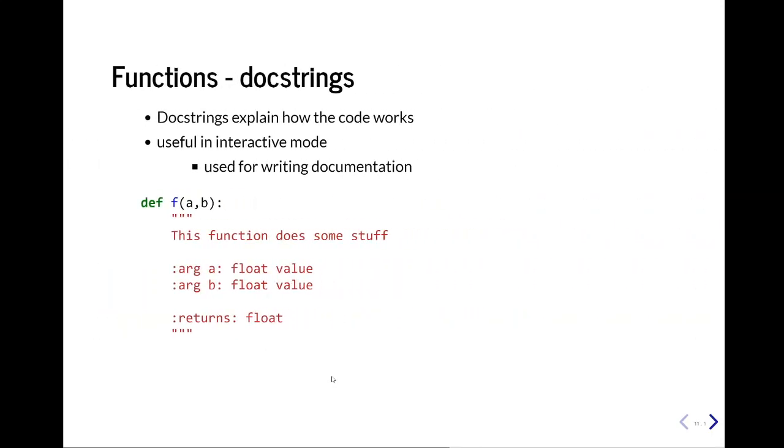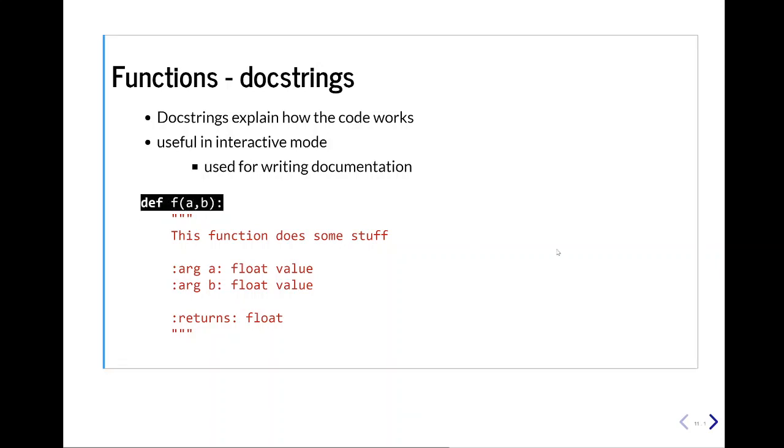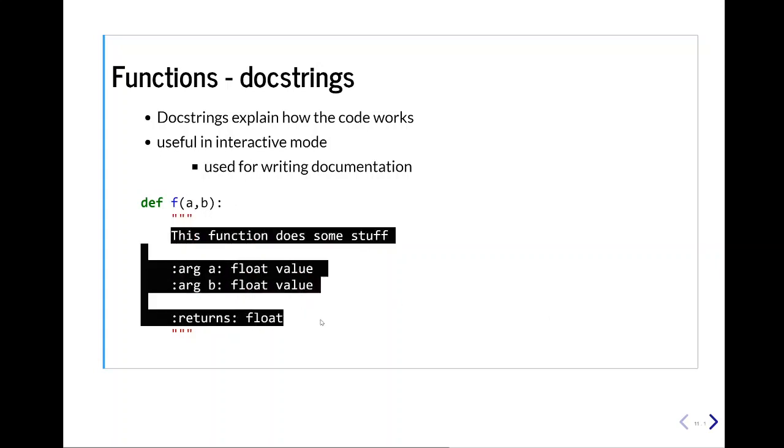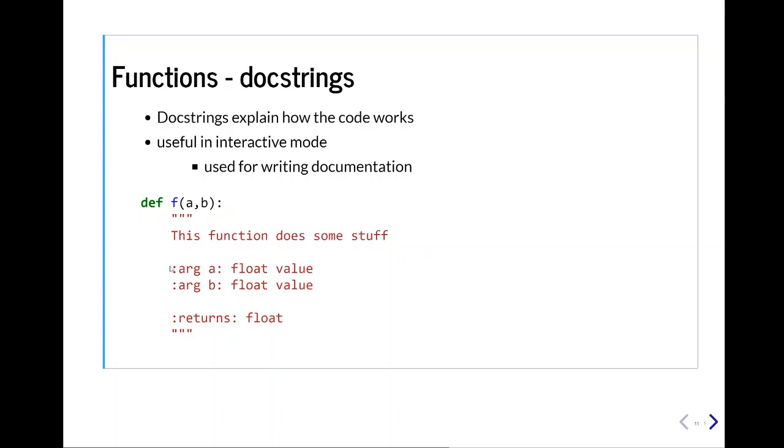Docstrings are very important, because code is a living thing, and often it can be around for a long time. And the docstrings explain how your code should work. It's useful in both interactive mode, so like this Jupyter notebook, or used for just writing documentation, especially if you have a large API. So every time you create a function, you should have a docstring. And this is done by doing three, you know, quotation or single quotes. And then you write a description of the function, and then you define each variable.